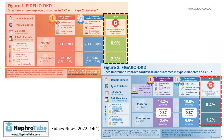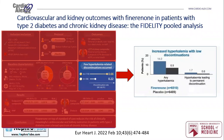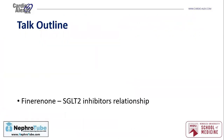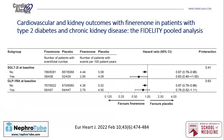Regarding safety, both studies documented that patients receiving finerenone had a higher risk of hyperkalemia than those receiving placebo. About 14% of patients in the finerenone group had hyperkalemia versus about 7% in the placebo group. However, hyperkalemia leading to permanent discontinuation was only about 1.7% of those 14%, so it may not be that significant. One option is to use new anti-hyperkalemic medications alongside finerenone, though cost may be a barrier.